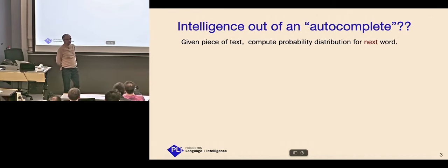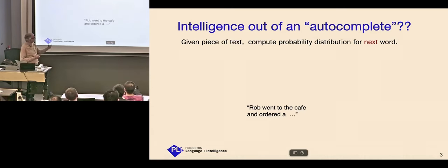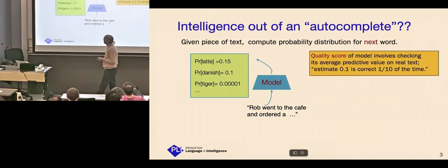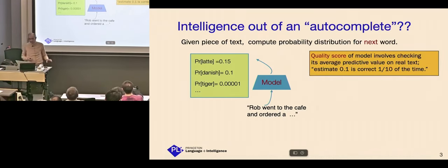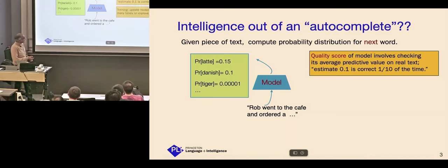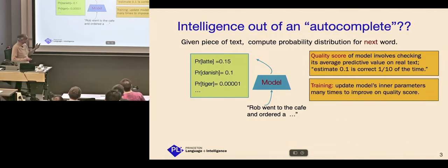The other thing that people, that will be directly relevant, is this whole debate about, is the thing intelligent? And even many experts find it hard to believe that out of what's essentially glorified autocomplete, you would get intelligence. Right? Because, as you know, that this is all they do, that there is a piece of text. You input it into the model, and you get a probability distribution on the next words. So, let's like autocomplete. And the quality score of the model involves checking, this is what it boils down to, basically it's average predictive value on real text. So, like, when you estimate the probability is 0.1, one-tenth of the time it's correct. Okay, roughly that's what it means.